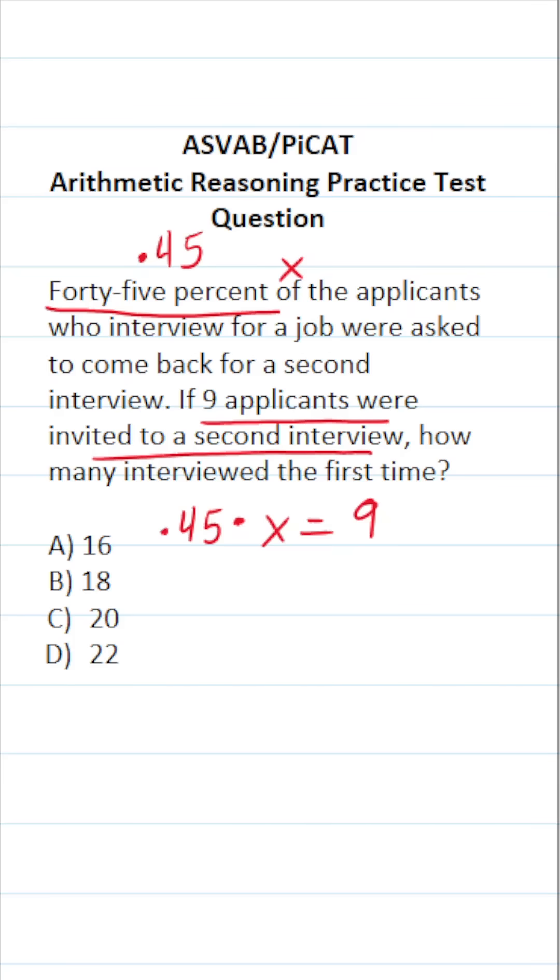Now that we've translated this into an equation, we can solve it. We're going to be solving it for X. The first thing I'm going to do is divide both sides of the equation by 0.45. This crosses out, leaving us with X over here.